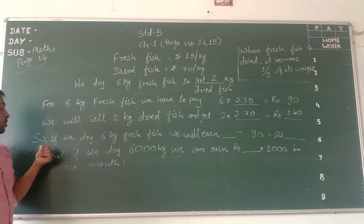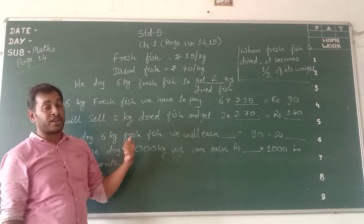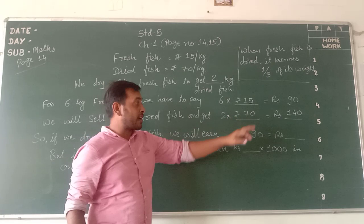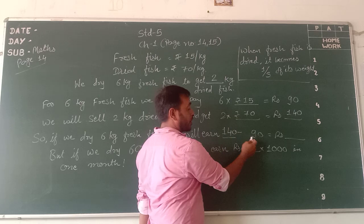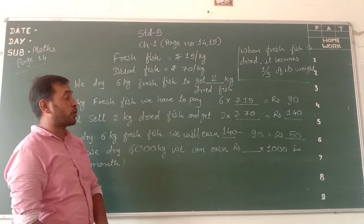So if we dry 6 kg fresh fish, dry it and then sell, we calculate 140 minus 90, that will become 50 rupees. So from 6 kg fresh fish we earn 50 rupees of profit.